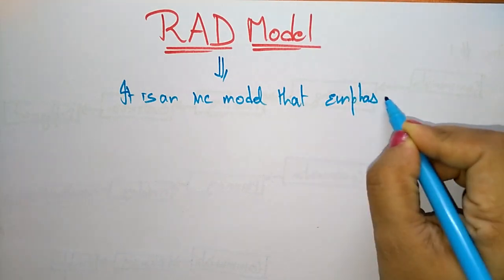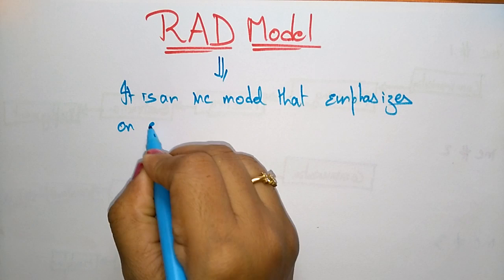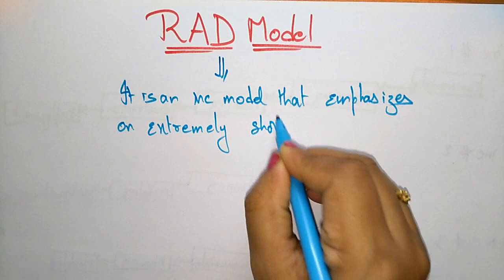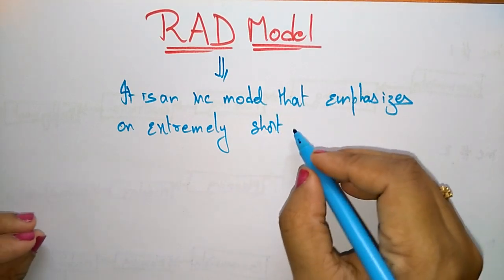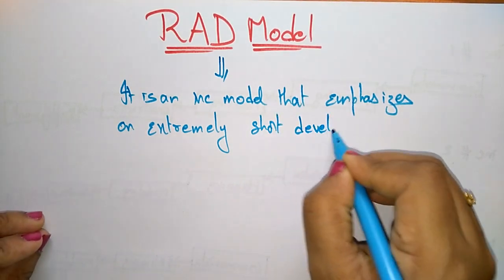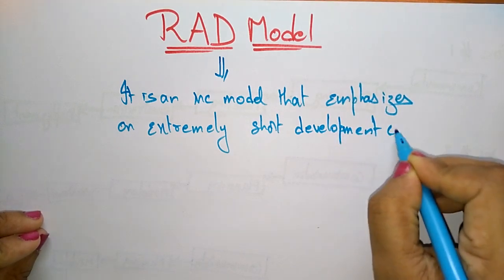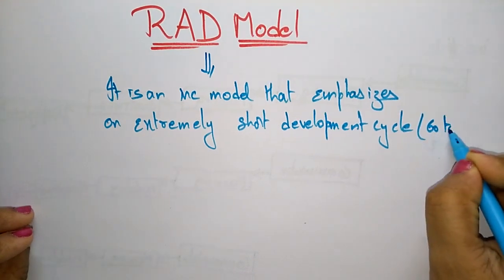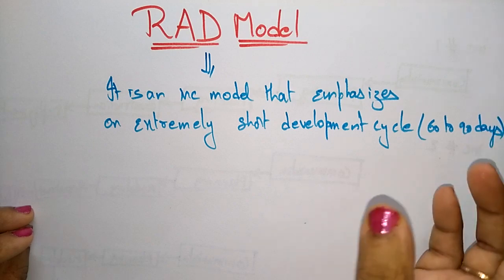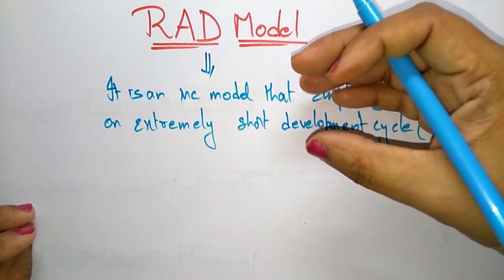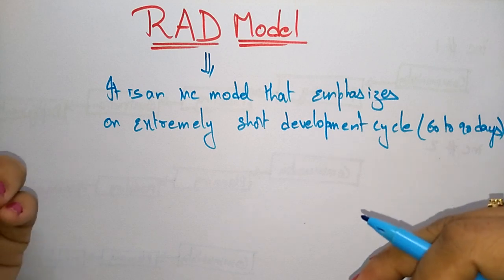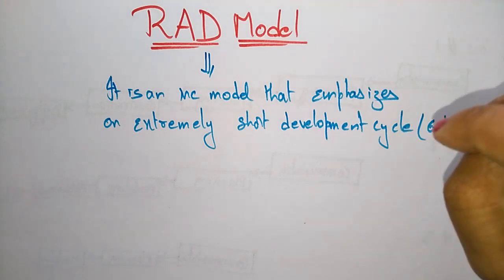Whenever you are dealing with a short development cycle, it's better to go for the RAD model rather than the incremental model. You have to consider projects which are taking a small duration of time to complete or deploy. The development cycle is from nearly 60 to 90 days. If you want to develop a product within 60 to 90 days, it's better to go for the RAD model for communication, planning, modeling, construction, and deployment.